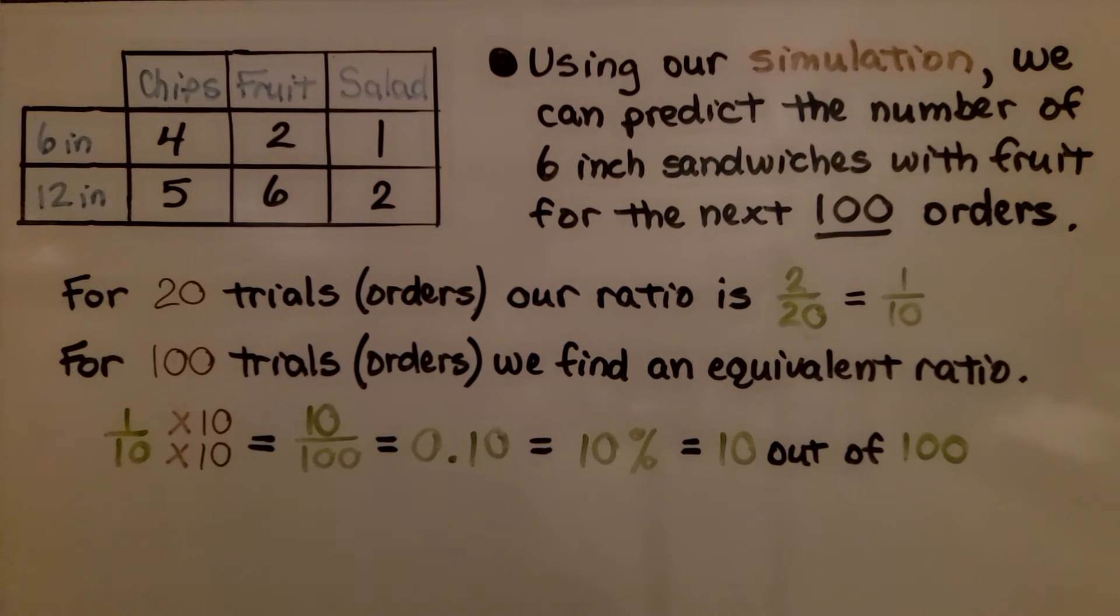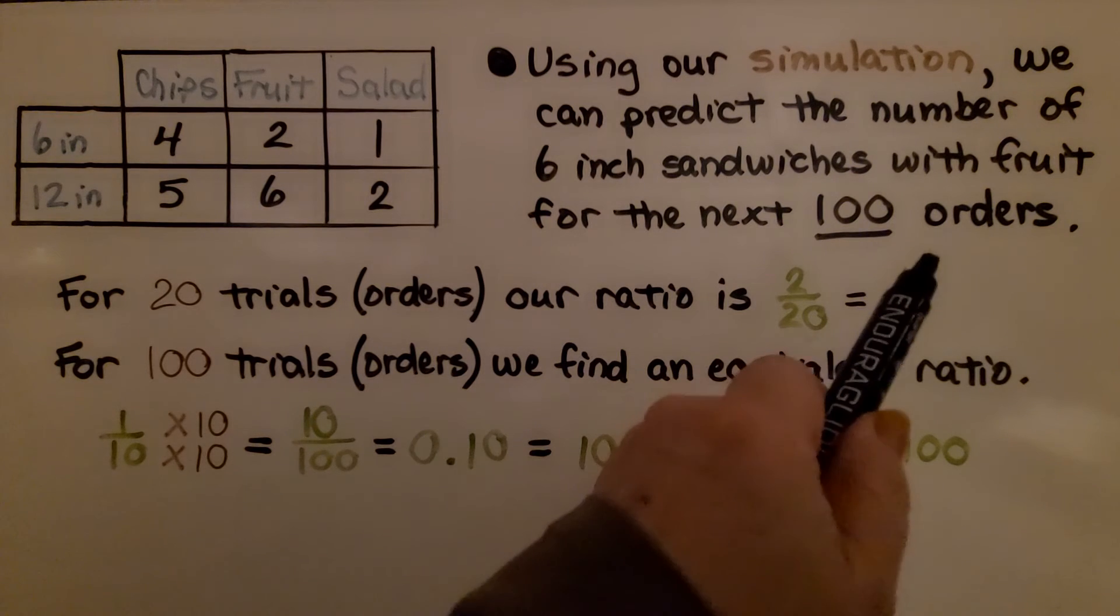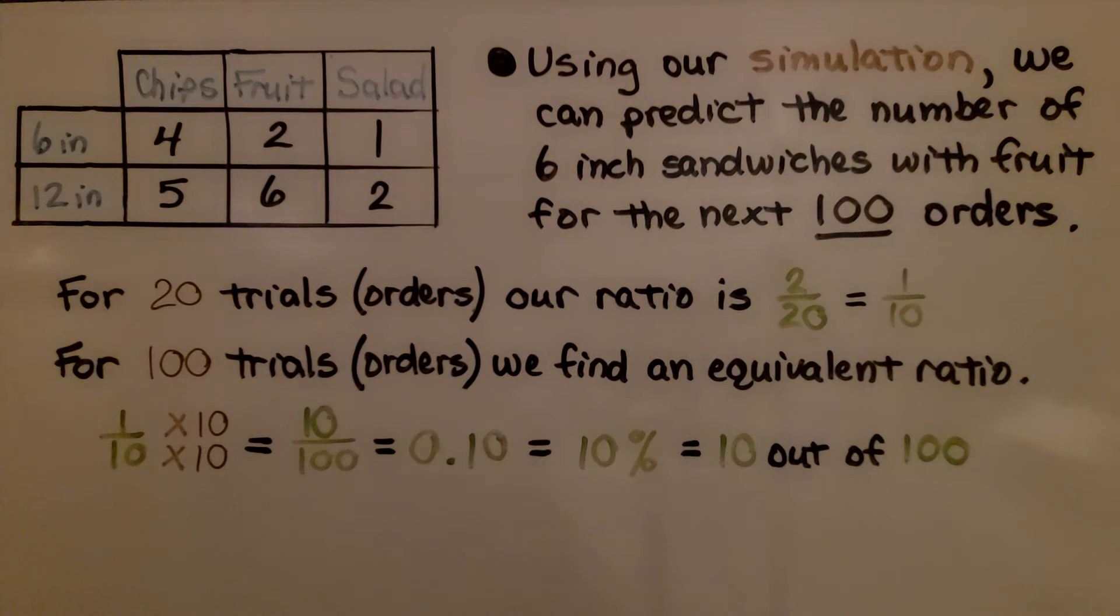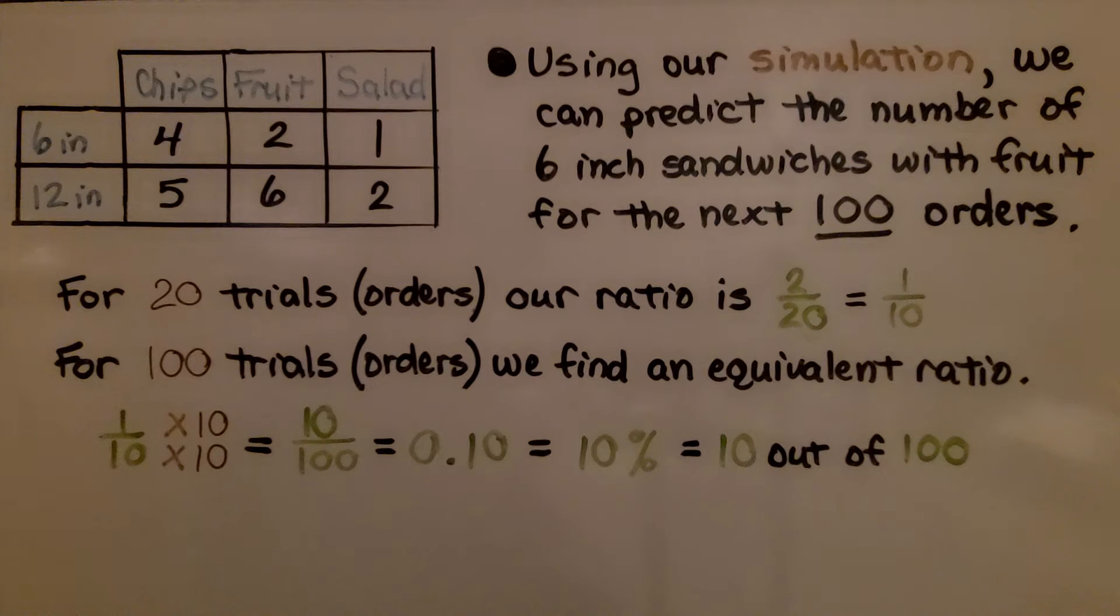Using our simulation, we can predict the number of 6-inch sandwiches with fruit for the next 100 orders. For 20 trials, that's 20 orders, our ratio is 2/20, which simplified to 1/10. For 100 trials, that would be 100 orders, we find an equivalent ratio to 1/10.